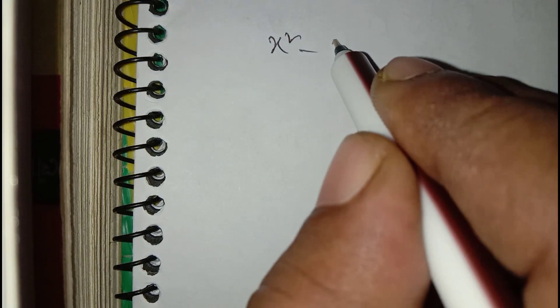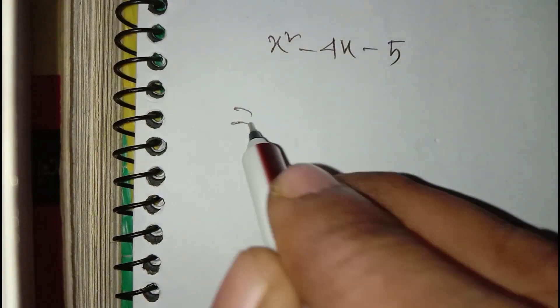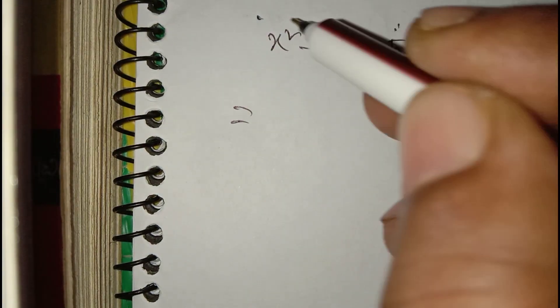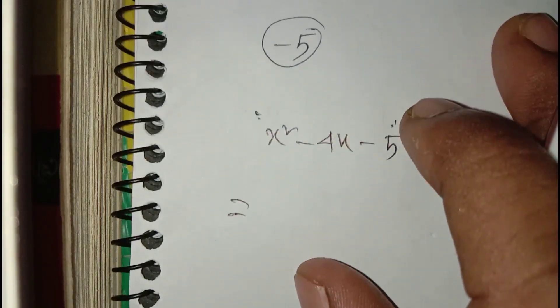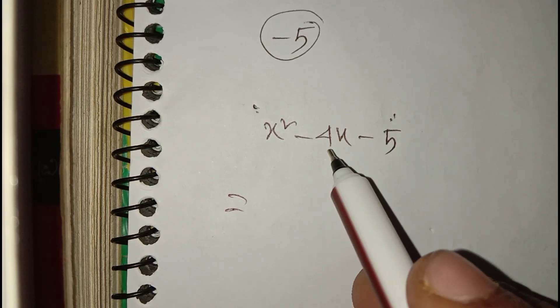I will show another similar example: x squared minus four x minus five. Look — here the first constant is one and the last constant is minus five. So minus five multiplied by one is equal to minus five, and we have to create a pair of factors that gives minus five.